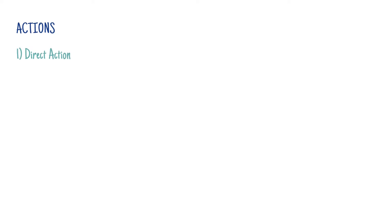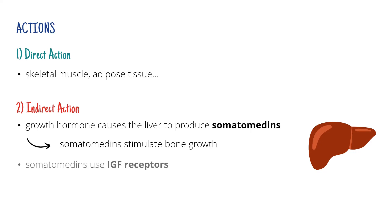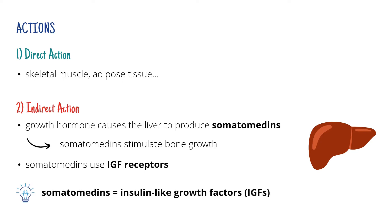Growth hormone can function either directly or indirectly. Direct action happens in, for example, skeletal muscle or adipose tissue. However, growth hormone can also work indirectly through somatomedines, which are produced in the liver. The hormone stimulates their production and they in turn stimulate bone growth. The somatomedines use the so-called IGF receptors. That's because when somatomedine stimulates growth, its effect is very similar to the effect insulin has. For that reason, somatomedines are also called insulin-like growth factors or IGFs, so it then makes sense to call their receptors IGF receptors.